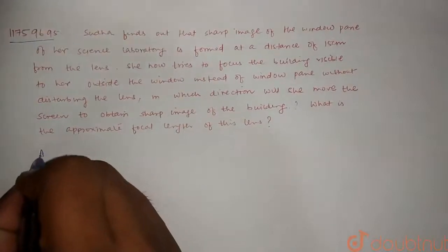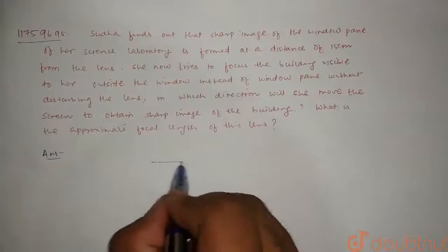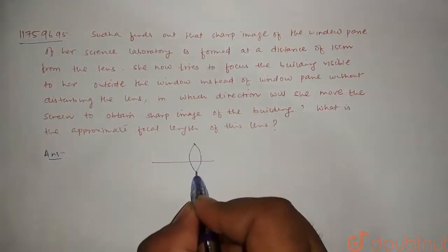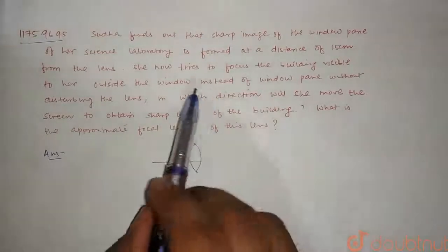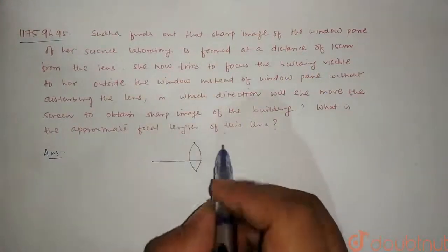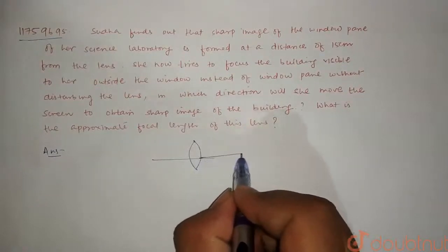Let's start the solution. Okay, let's say my lens is here. This is my lens. The first part is that the image made by window pane in science laboratory is formed at a distance of 30 cm from this lens.